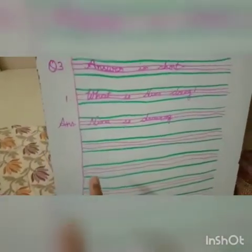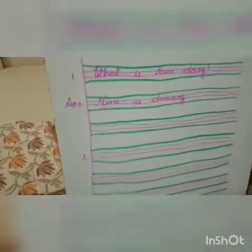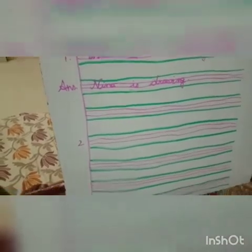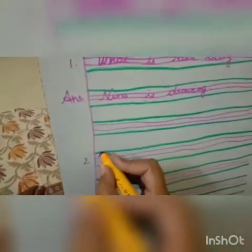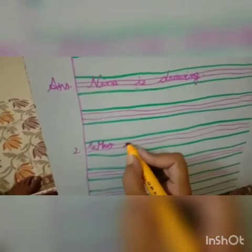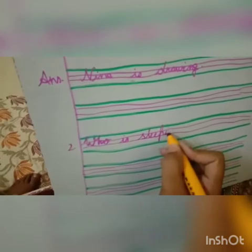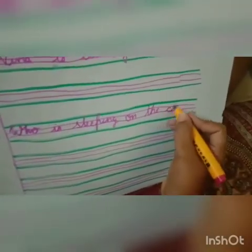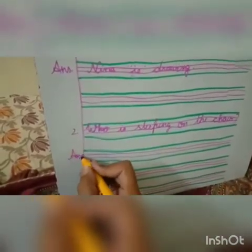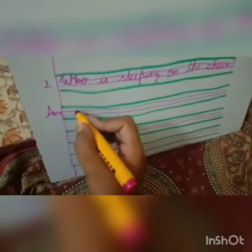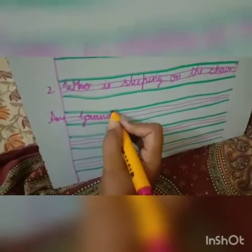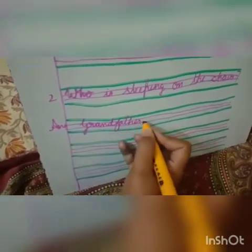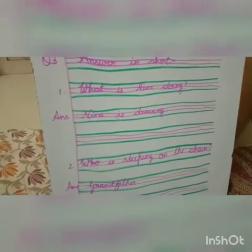Then we have to skip one line. Then the second one: Who is sleeping on the chair? C-H-A-I-R. Chair. Question mark. In the story, who is sleeping on the chair? The answer is ANS. Grandfather. G-R-A-N-D-F-A-T-H-E-R. Grandfather. Who is sleeping on the chair? Grandfather.